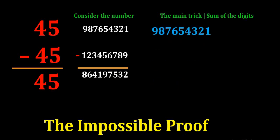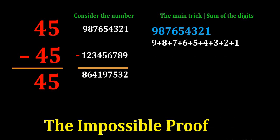What is the sum of the digits in the first number 987654321? It equals 9 plus 8 plus 7 plus 6 plus 5 plus 4 plus 3 plus 2 plus 1, which is equal to 45.